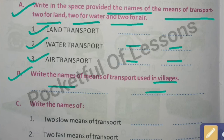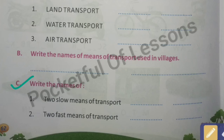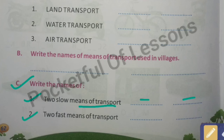Next Exercise C: write the names of means of transport in the space given. First, two slow means of transport - which ones move slowly. You can write bicycle and scooter or motorcycle. Number two: two fast means of transport - which ones move fast. So aeroplane and train are fast means of transport.